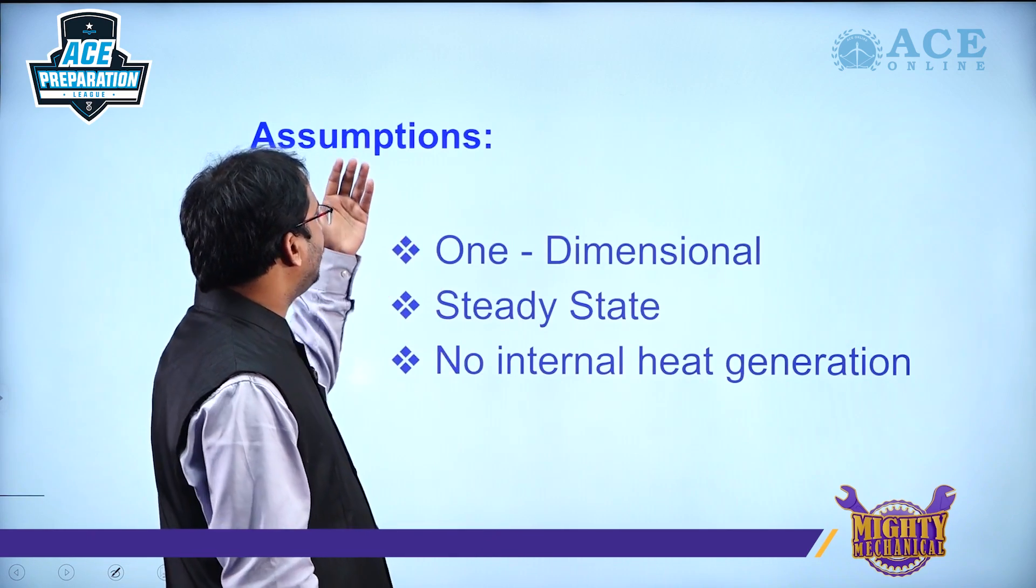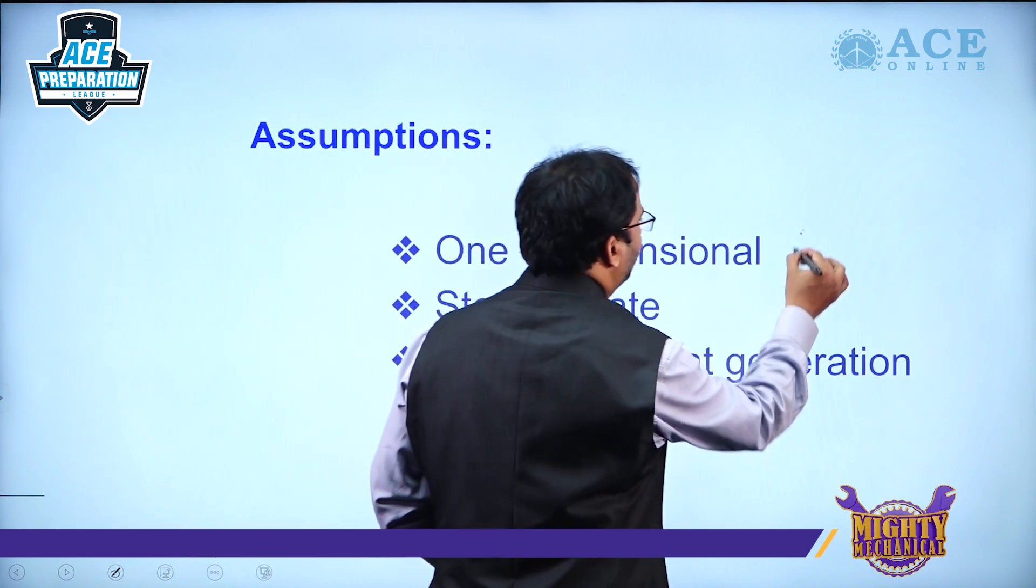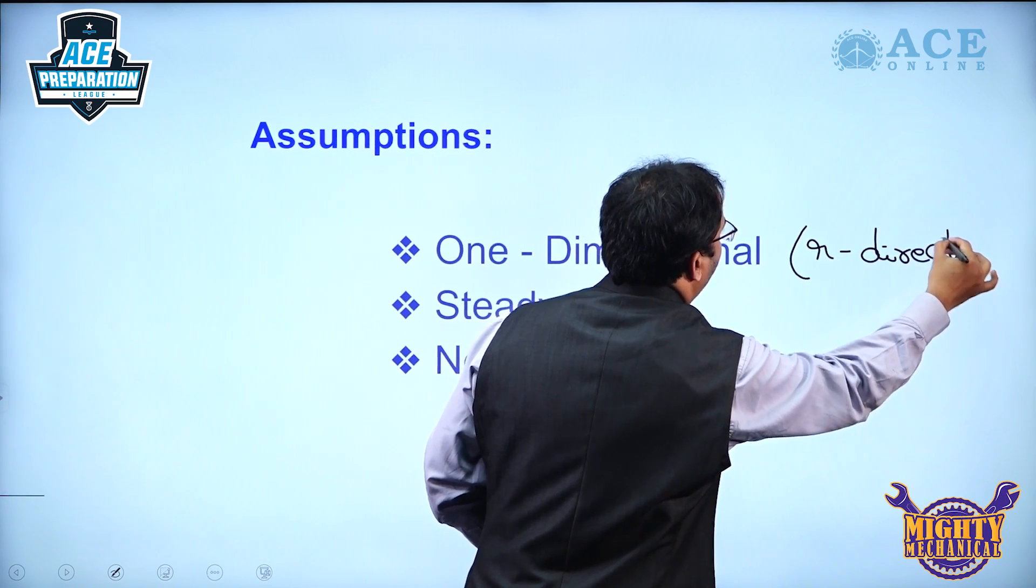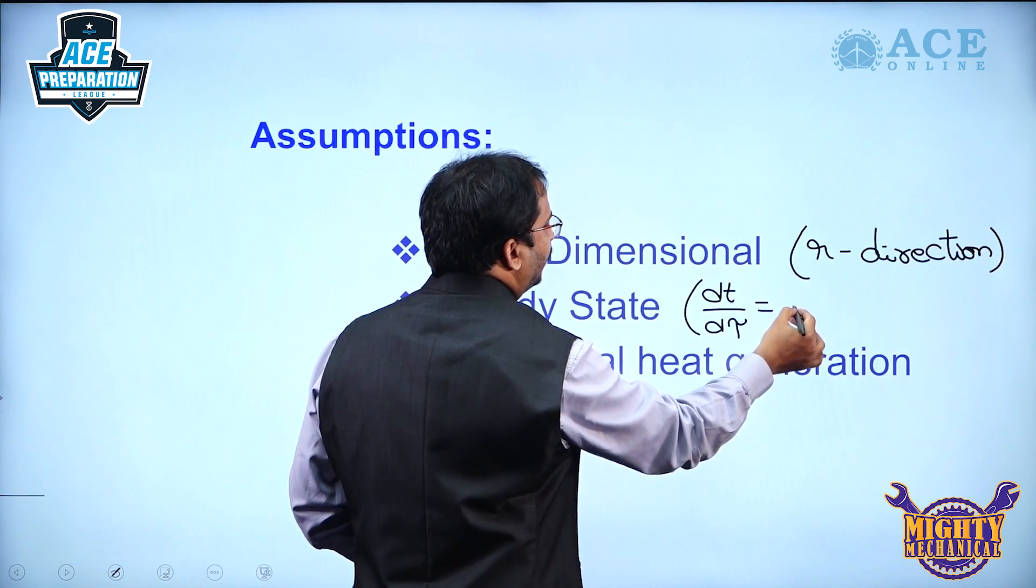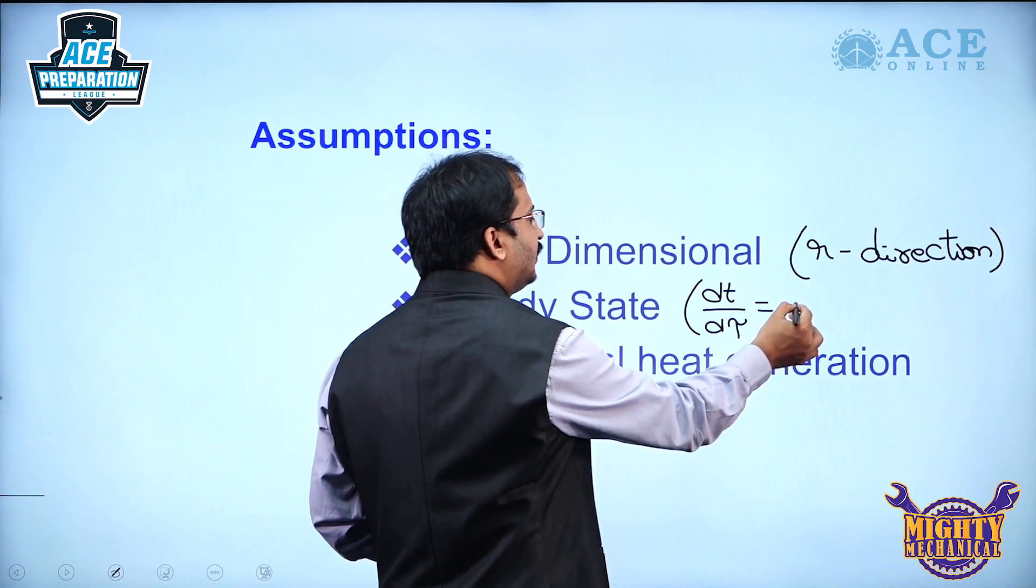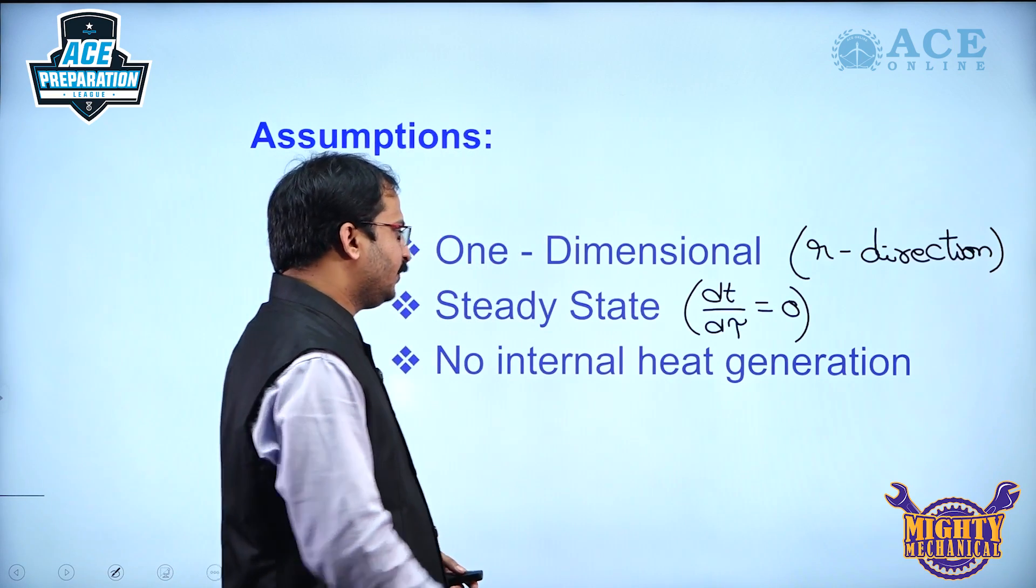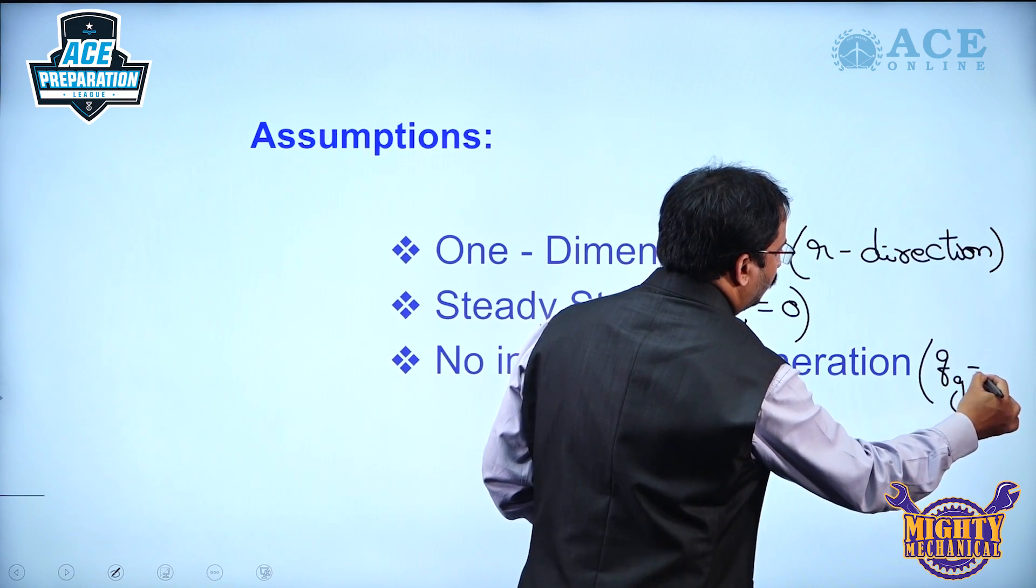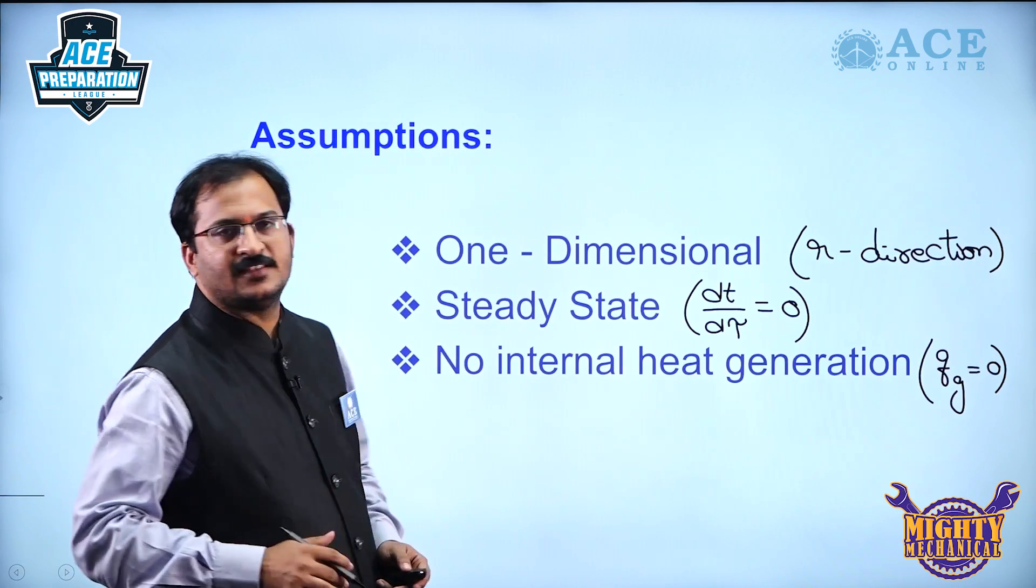The assumptions we need to consider are: we are taking one dimensional condition, that means we take only the radial direction. Steady state condition with respect to time, there will be no variation in temperature, so dT by dτ is equal to 0. And there is no internal heat generation, QG equal to 0. These are the assumptions in this case.